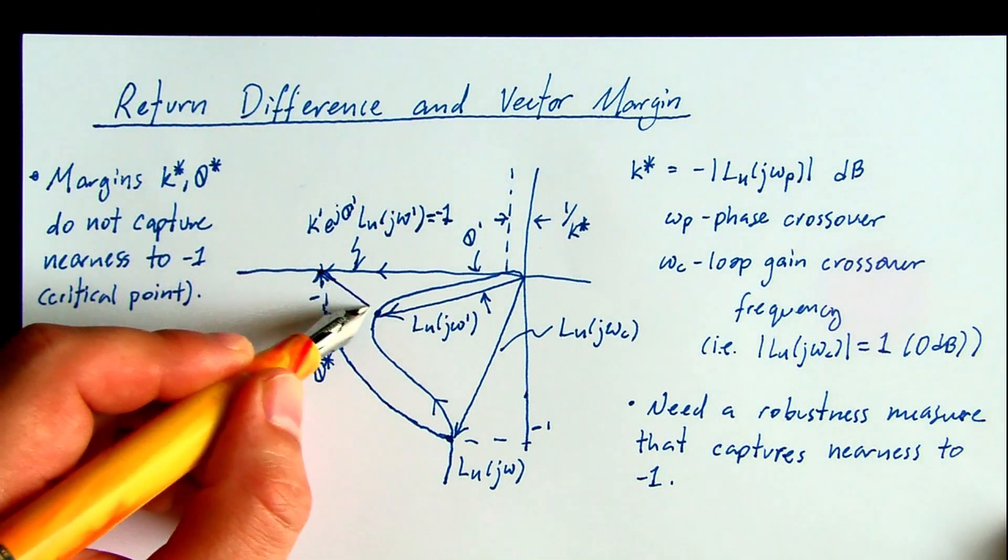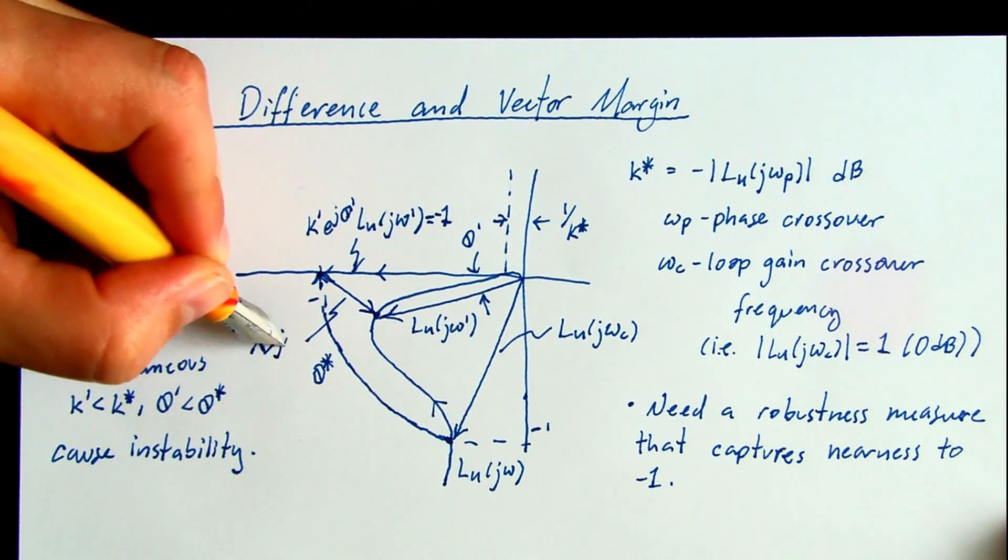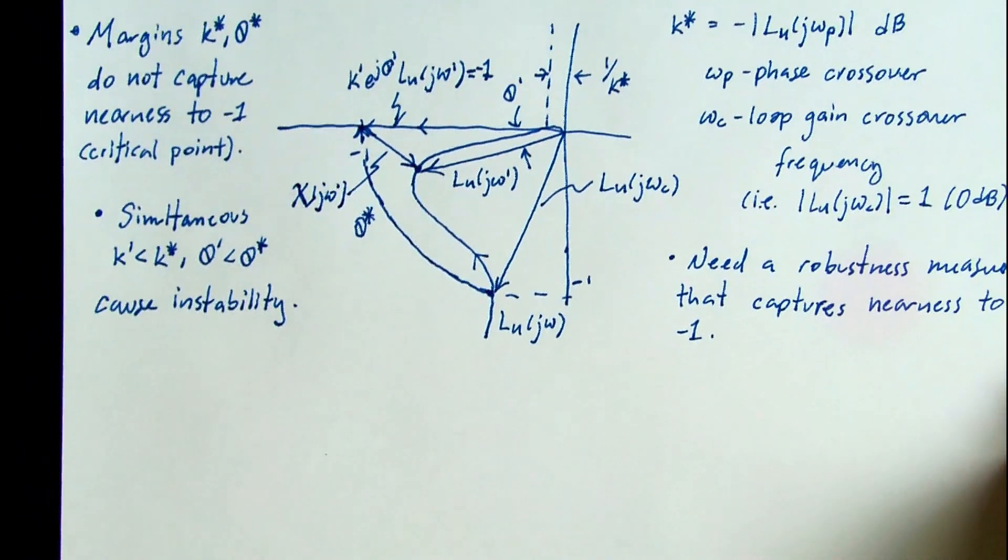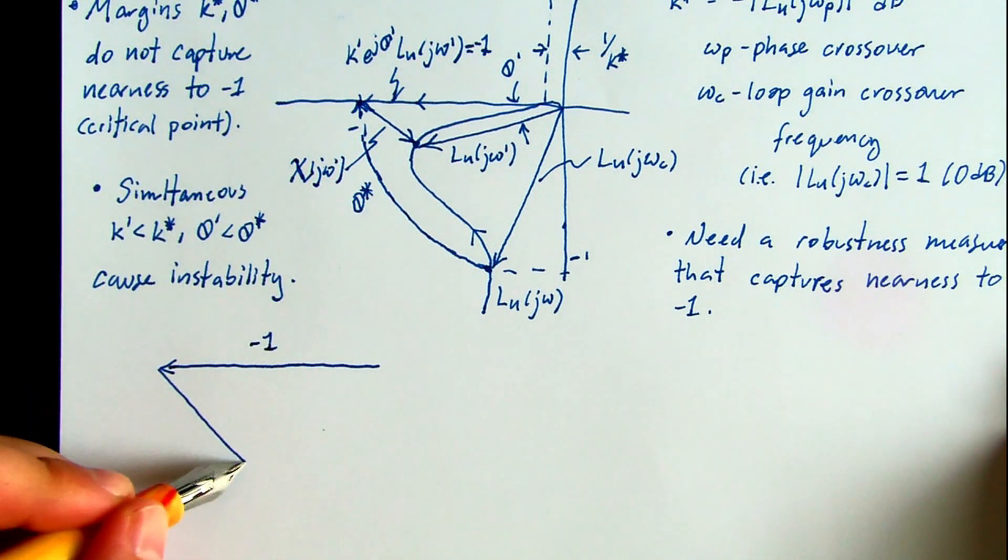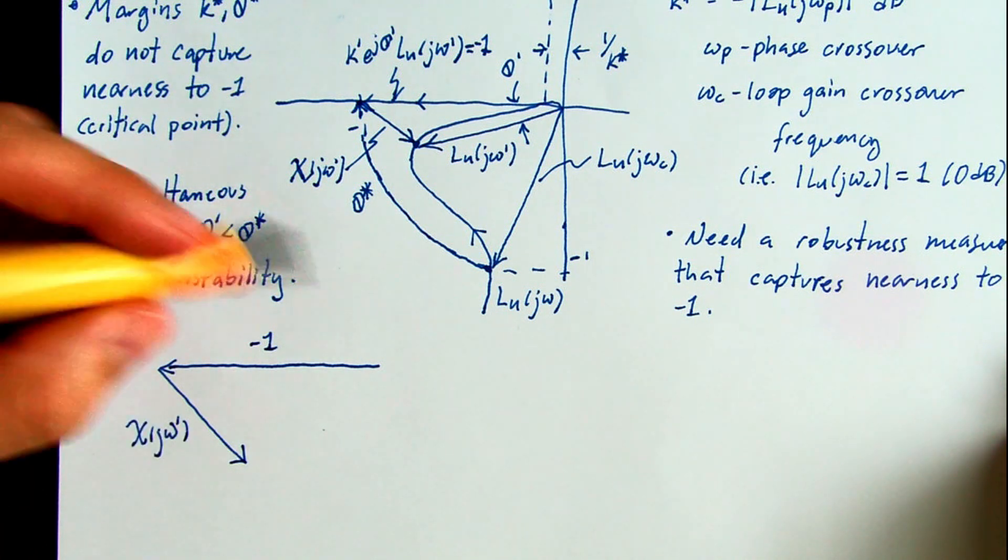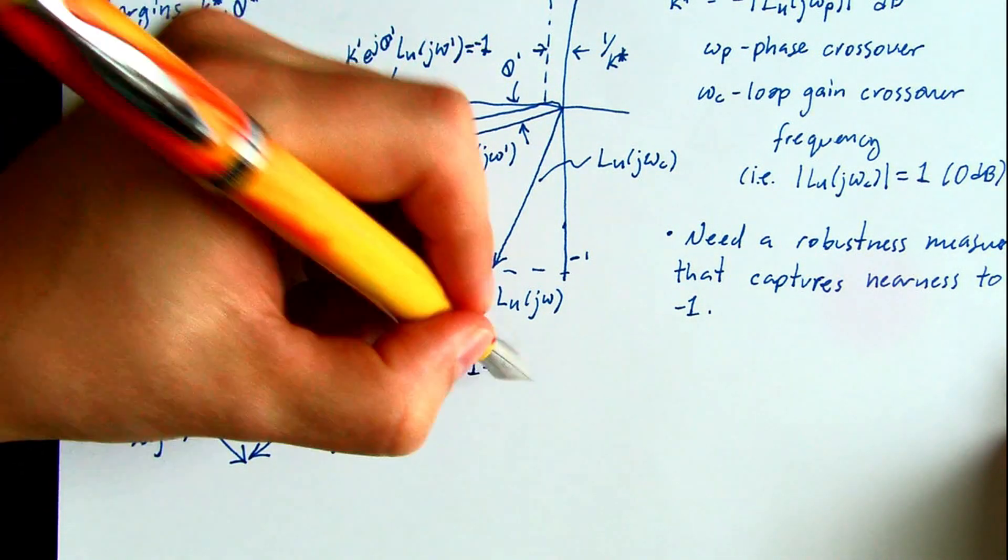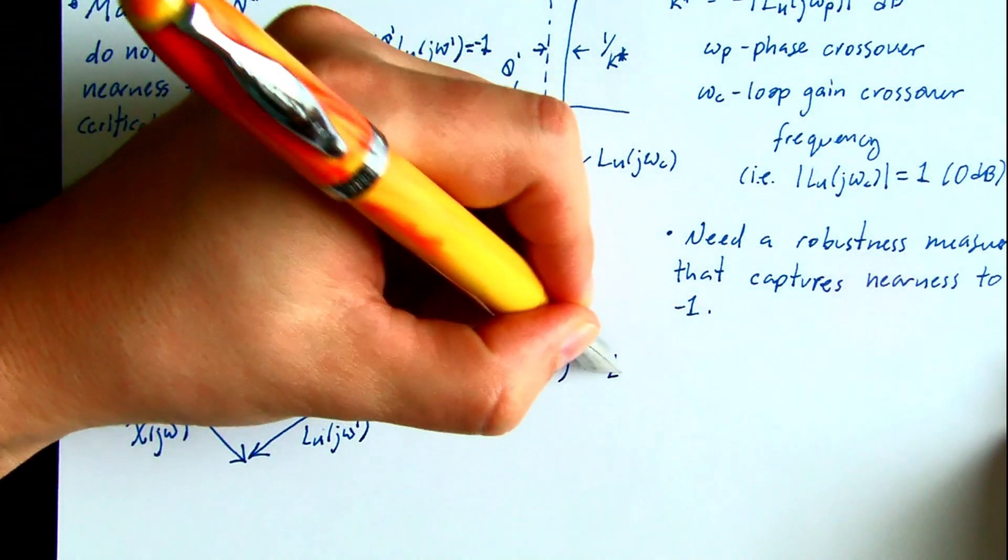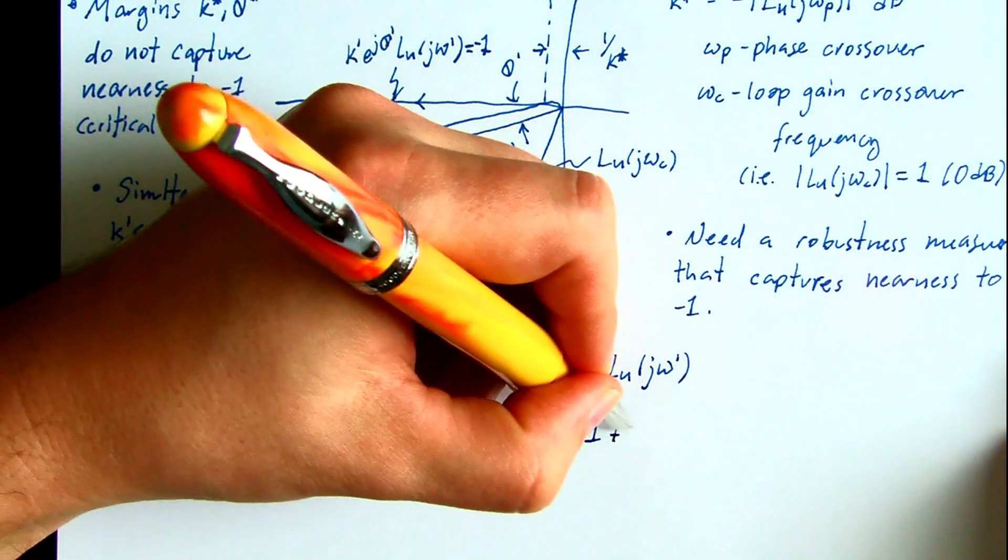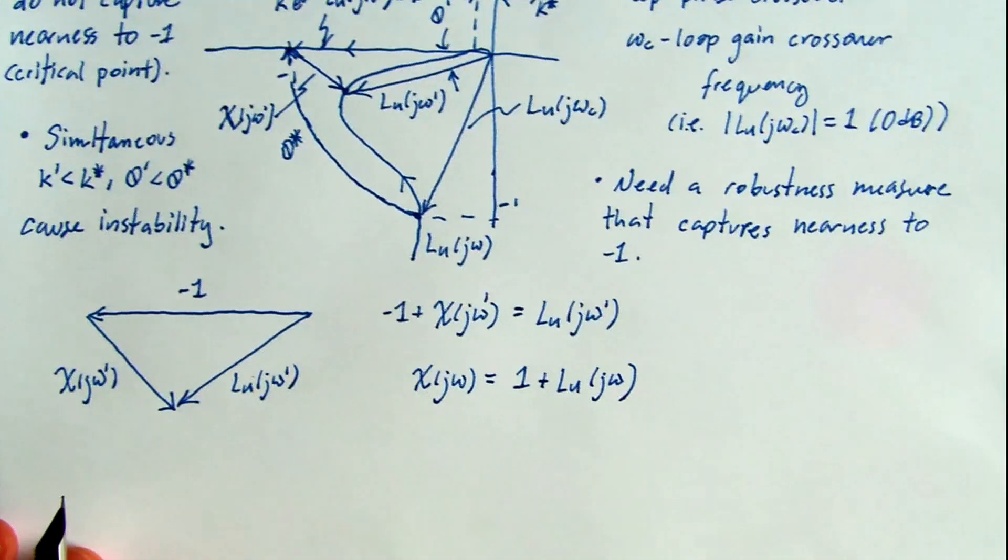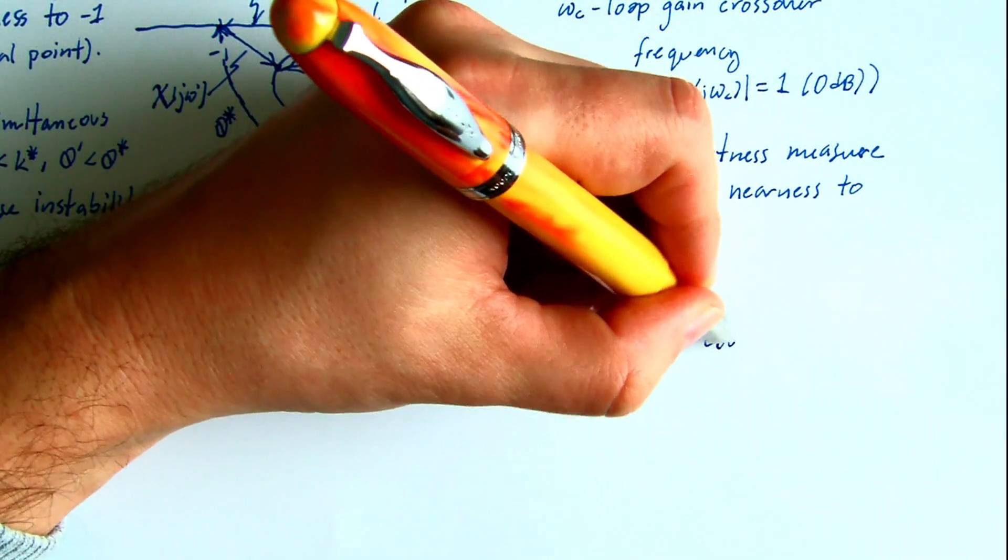Clearly, this distance can be captured by a new phasor starting at the critical point. We're going to denote it chi of j omega. And note that we've just created a triangle between the minus one vector, chi, and the loop gain. So we can solve for chi. And then writing out the loop gain as minus u out over u in, we obtain another interpretation for the transfer function chi of j omega.